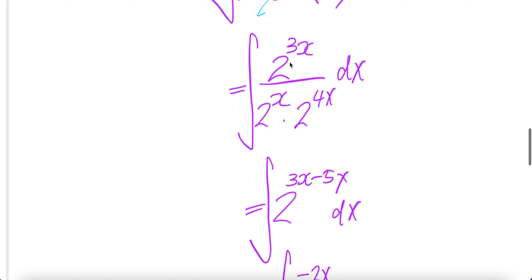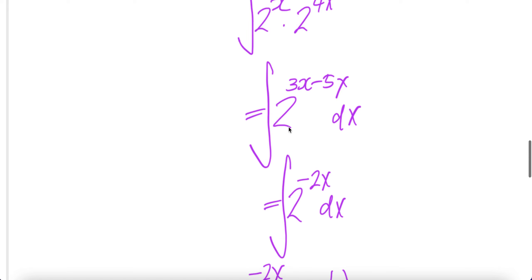This we can simplify: 2 to the power 3x upstairs minus here, you can add them 5x minus 5x. This results in 2 to the power of negative 2x dx.